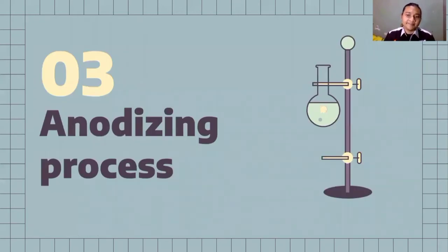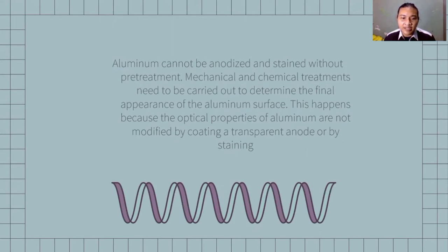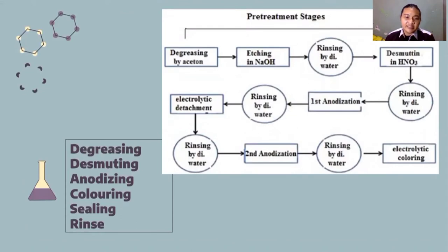Anodizing process: aluminum cannot be anodized and stained without prior preparation. Mechanical and chemical treatments need to be carried out to determine the final condition of the aluminum surface. This is because the optical properties of aluminum are not modified by coating with transparent anodized layer or by staining.